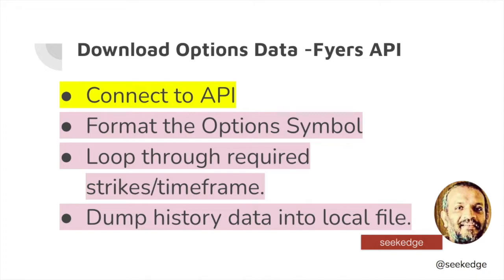It's a three-step procedure. One is to format the option symbol — format the symbol or instrument that we are going to download. Then loop through the different symbols. In an option chain you have all the different strikes — 50 or 100 points apart in the case of indices, different for stocks. You loop through what strikes you need for the option chain, what time frame you need — 15-minute, 1-minute, or whatever — and then dump it into a local file. Those are the three basic steps.